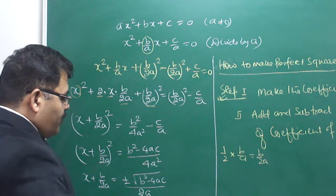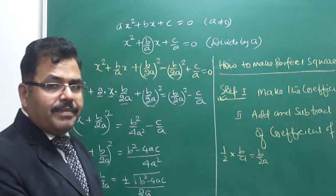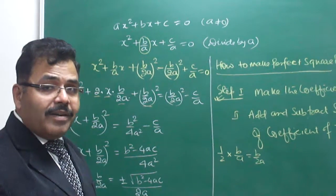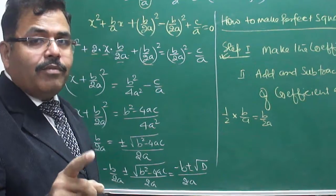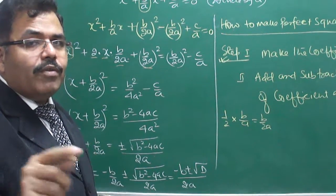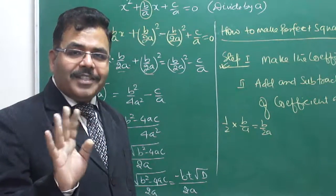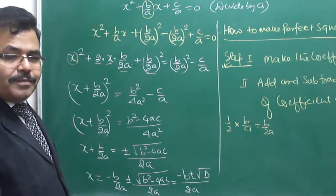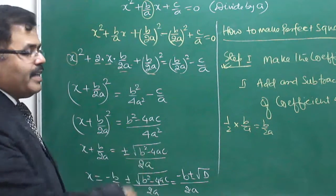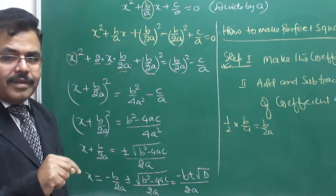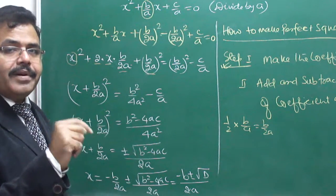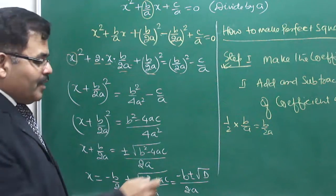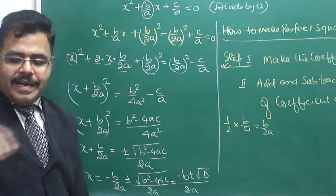Here b² − 4ac tells us many things. The square root of a negative number does not give a real value — for example, x² = −4 gives x = √(−4), which has no real value. So if this expression under the root is negative, there are no real roots. This term decides whether roots are real or not, and it is called the discriminant D.